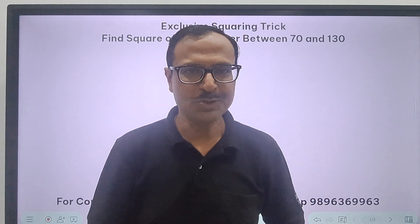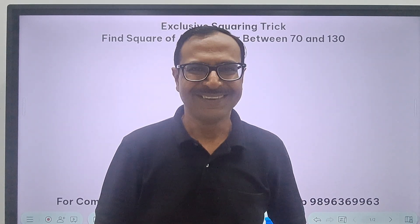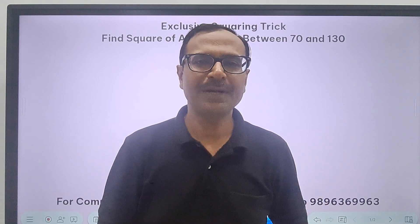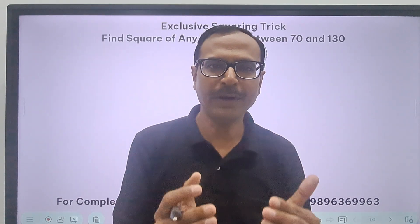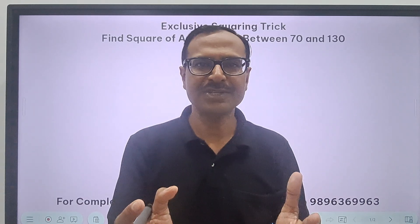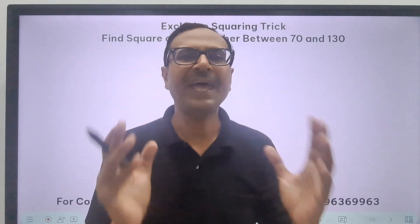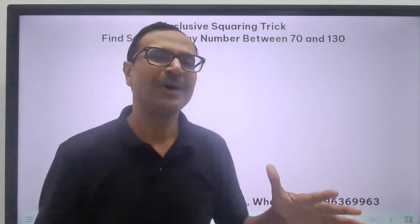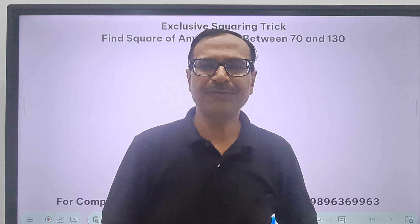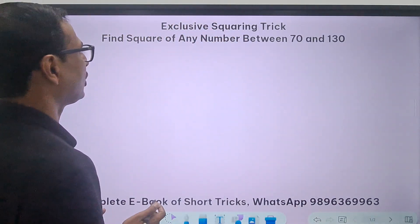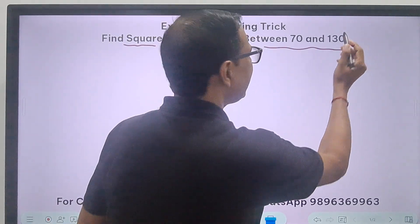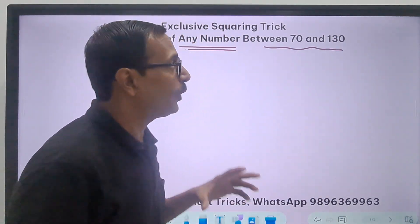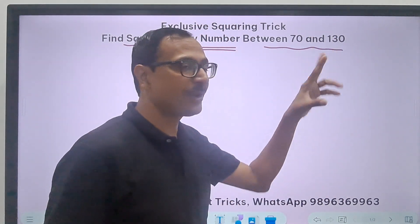You need to subscribe the channel, right? So if you have not subscribed it, click the subscribe button and click the bell-shaped icon so that you keep on getting all these notifications and you don't miss out on any fun which is being uploaded on the channel. So look at the video here. The title says it all: you can find the square of any number between 70 and 130. Now why did I take these boundaries, 70 and 130? You will know very soon when you understand the trick given here.